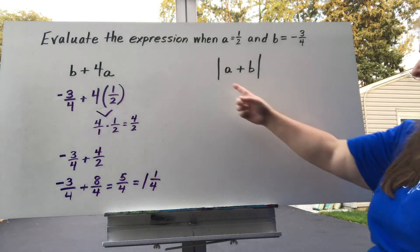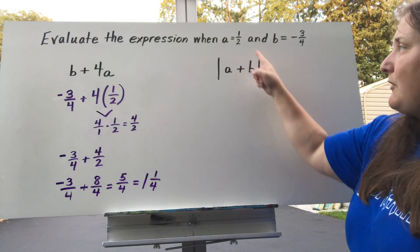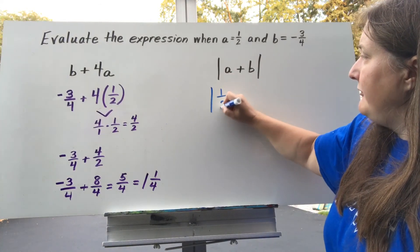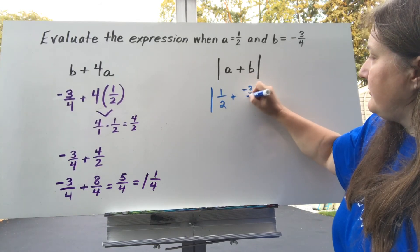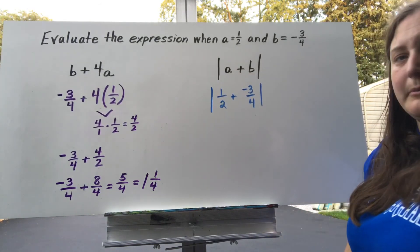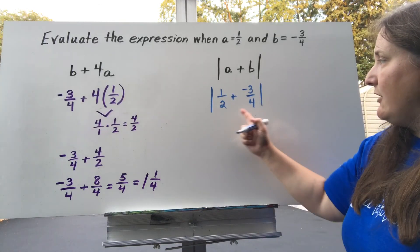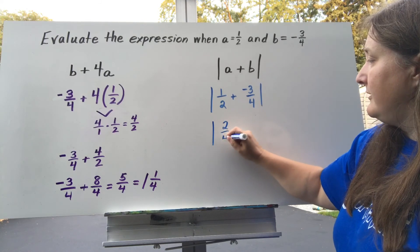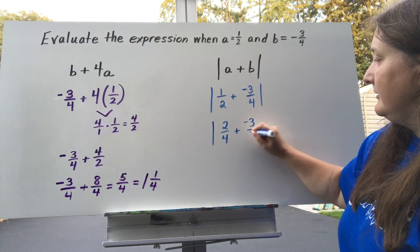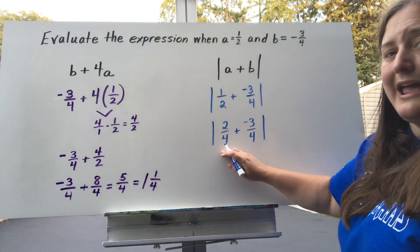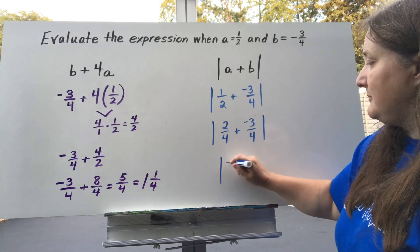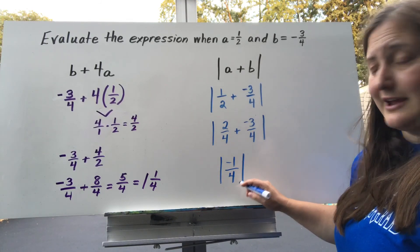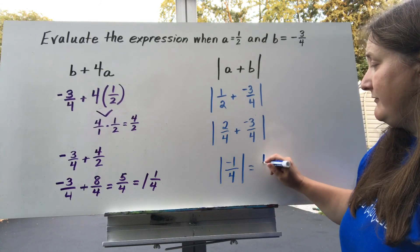Let's try one more. This one has an absolute value symbol around it, but I still have to do the problem inside first. The problem inside is a plus b, which is 1 half plus negative 3 fourths. I need a common denominator of 4, so 1 half becomes 2 fourths. Now I add: 2 plus negative 3 gives me negative 1 fourth. The denominator carries over, and then the absolute value of negative 1 fourth is positive 1 fourth.